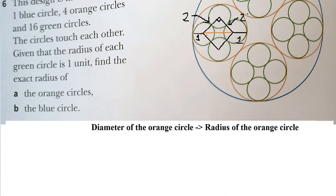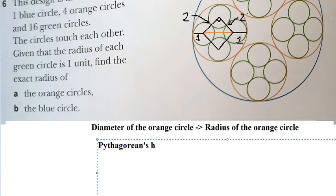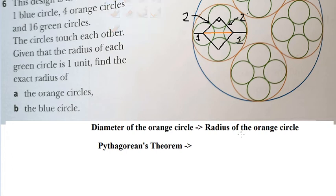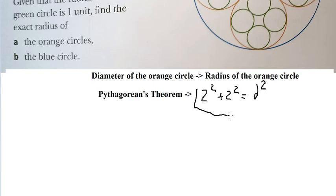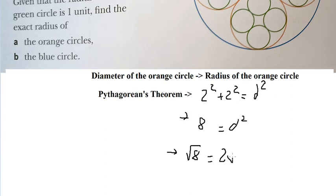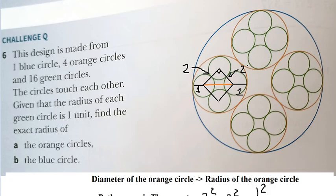We want to use the Pythagorean theorem. We have two squared plus two squared equal to d squared, the diagonal of the square. We calculate that as eight. Now we put the square root on both sides, and we get d equals two times the square root of two.